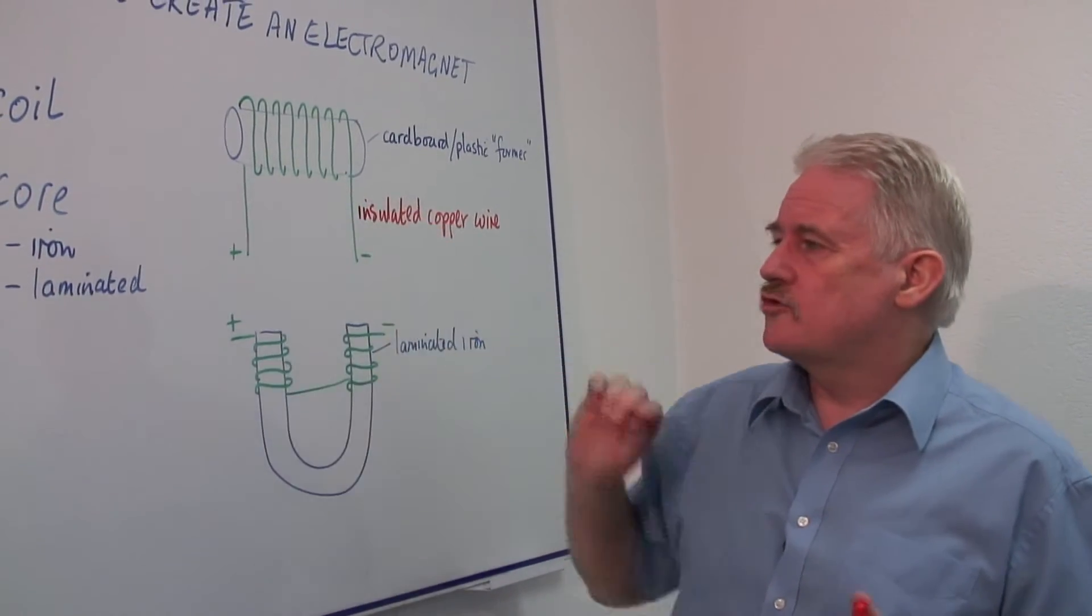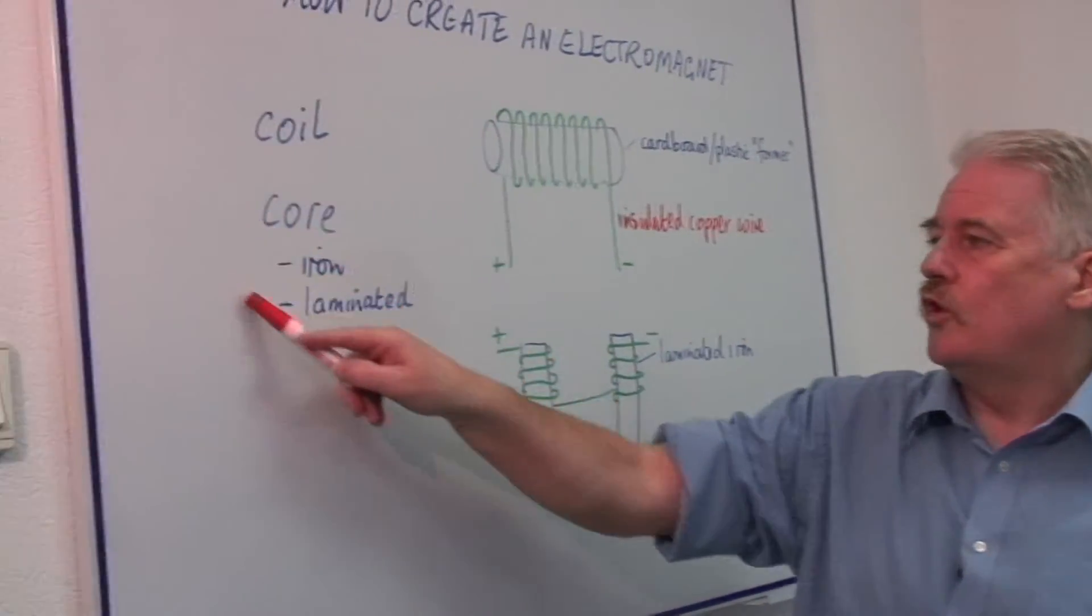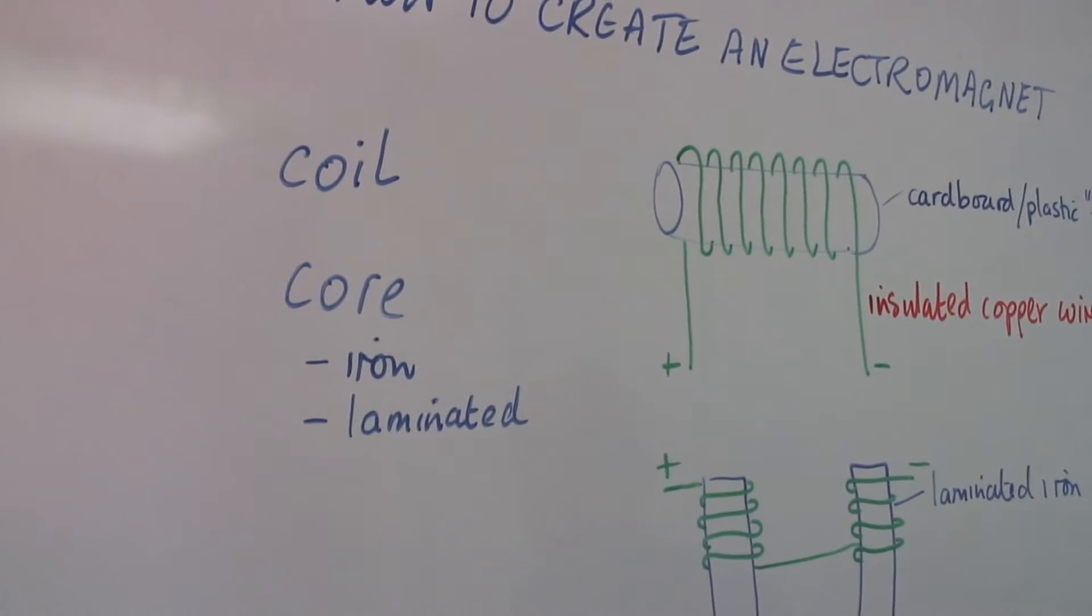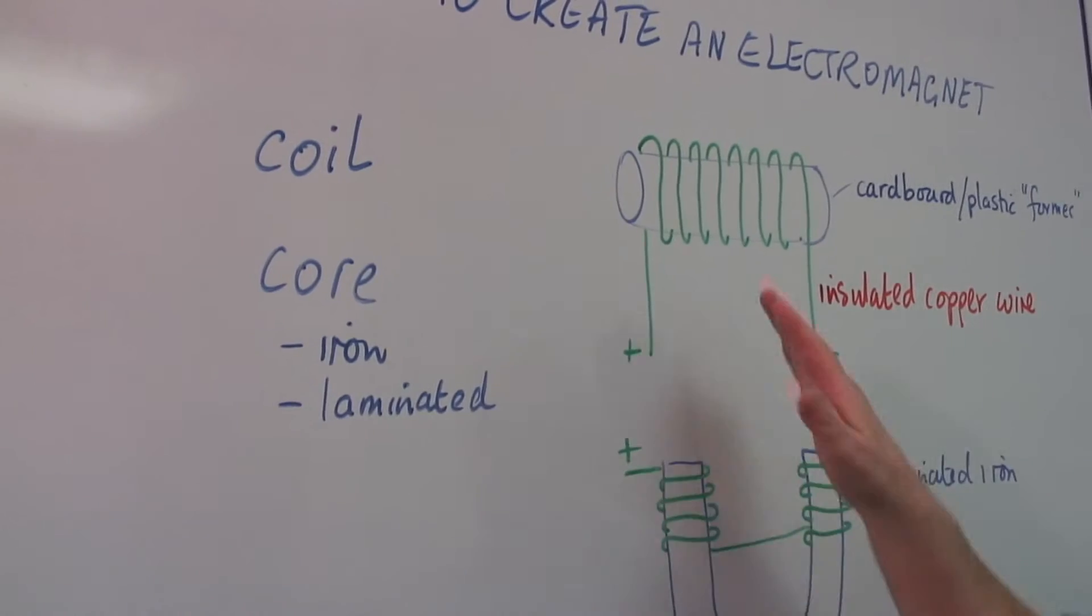To make it much stronger, we always put a core inside. The core should be iron, and normally is laminated, but it doesn't actually have to be with this type of magnet.